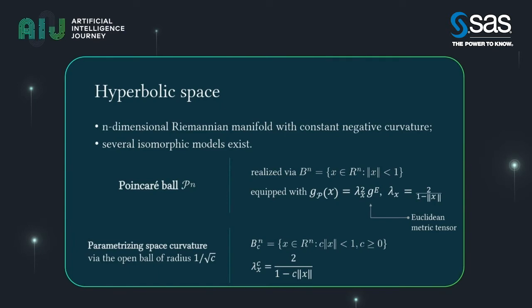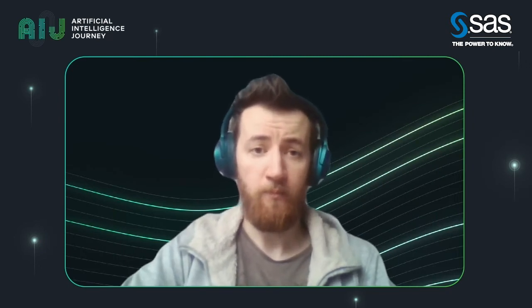The formal definition is shown on the right. What you should pay attention to here is that we introduce a conformal factor, lambda x, that has singularity on the border of the ball. You can also parameterize the space — because it has a constant curvature, you can set it up and define it inside the space. In practice, you can actually pre-calculate it based on a set of data.